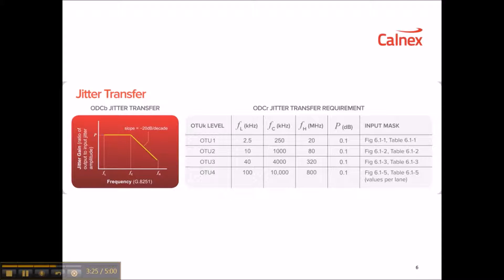Finally, we come to OTN Jitter transfer. The G.8251 masks are shown here for Jitter transfer. These are the pass-fail masks for controlled Jitter applied by test equipment, where the instrument measures the gain at each point in the mask. Each OTN interface rate has a different transfer mask. Unlike tolerance, the plotted results must be below the mask. The first mask is for OTU1, covering a frequency range up to 250kHz where the gain must be less than 0.1 dB, and the mask rolls off to 20MHz after 250kHz. There are also masks for OTU2 and OTU3. The last mask is for OTU4, covering a frequency range of 100kHz to 10MHz with a gain less than 0.1 dB, then rolling off to 800MHz from 10MHz.